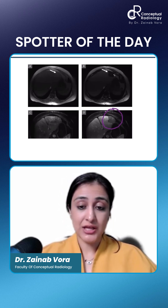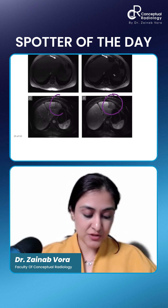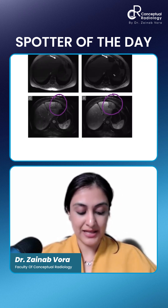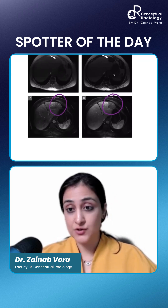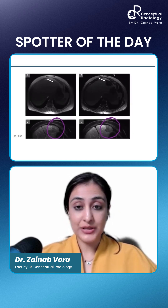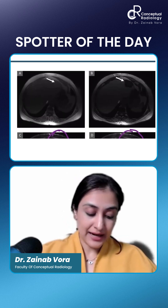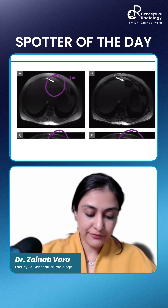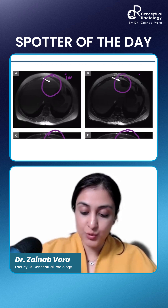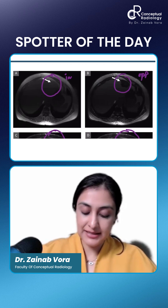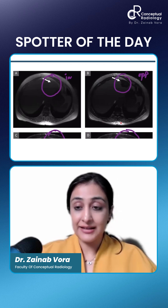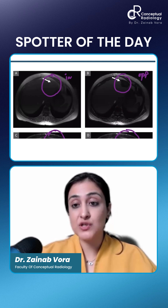Look carefully. There is a mass which on arterial phase is showing some enhancement. On venous phase it is showing washout. This is the in-phase and this is the opposed phase. How do I know? Because we can see that there is an India ink artifact here. So what are we seeing? It is almost completely made up of microscopic fat.